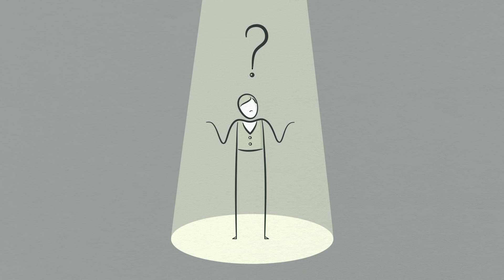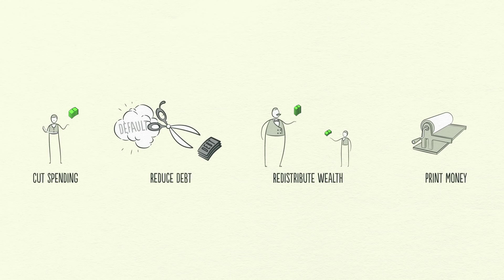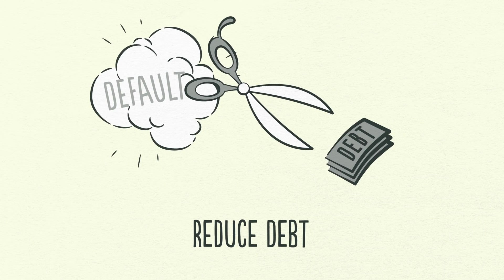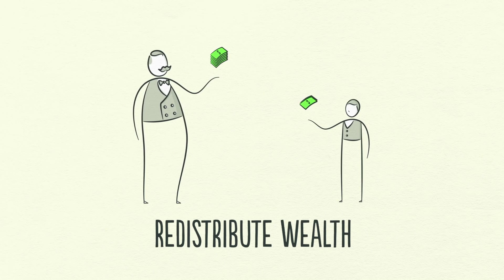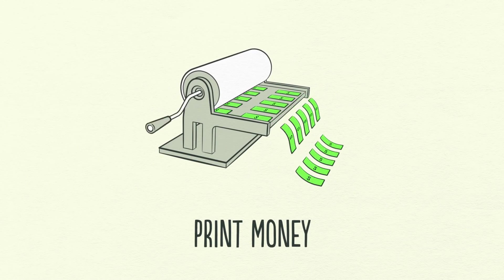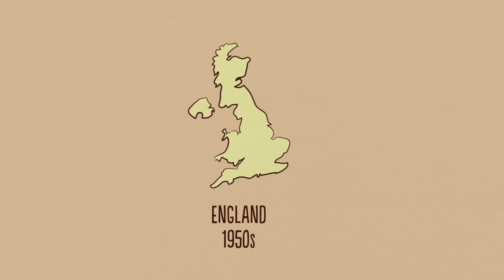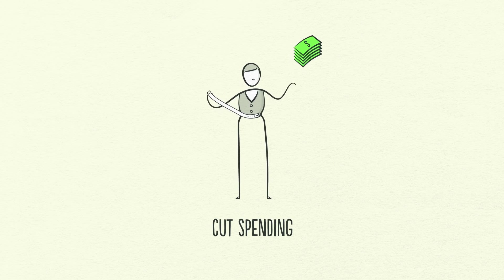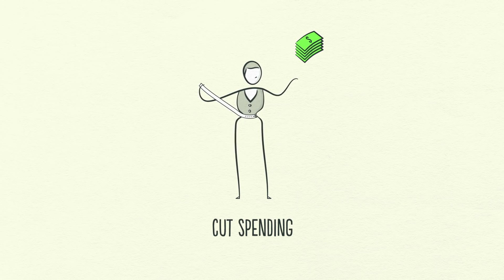The problem is debt burdens are too high and they must come down. There are four ways this can happen. One, people, businesses and governments cut their spending. Two, debts are reduced through defaults and restructurings. Three, wealth is redistributed from the haves to the have-nots. And four, the central bank prints new money. These four ways have happened in every deleveraging in modern history. Usually, spending is cut first. People, businesses and even governments tighten their belts and cut their spending so that they can pay down their debt.